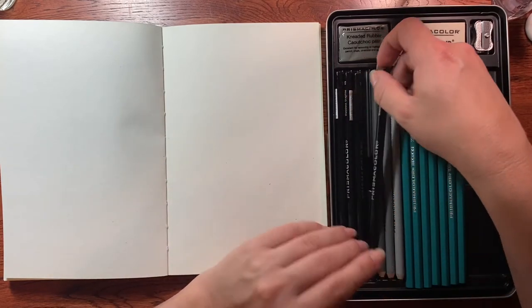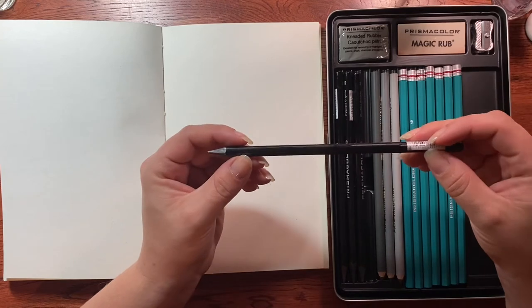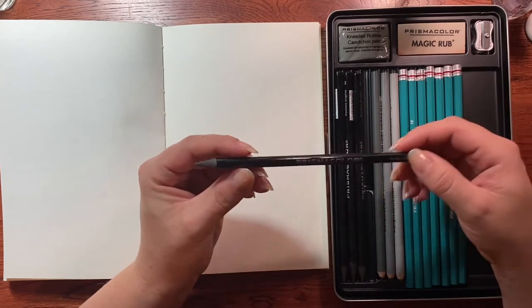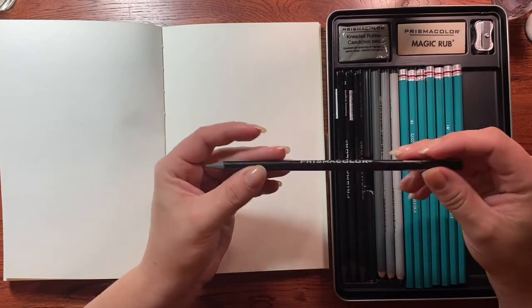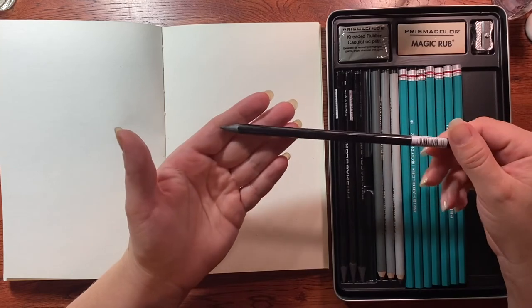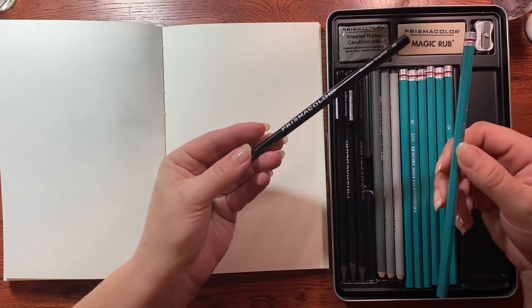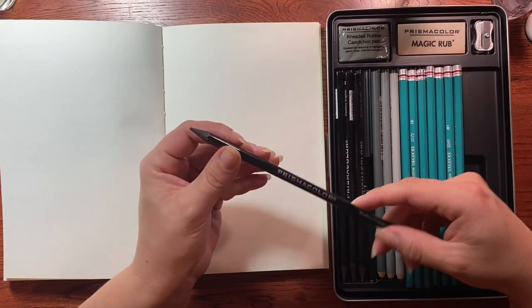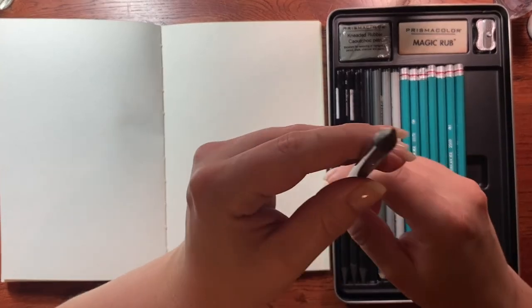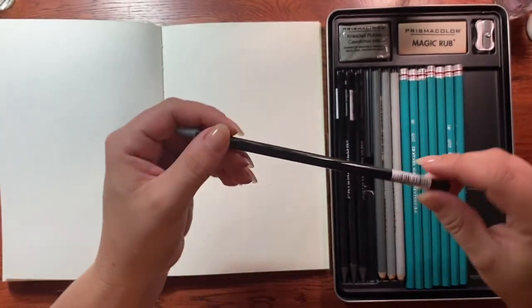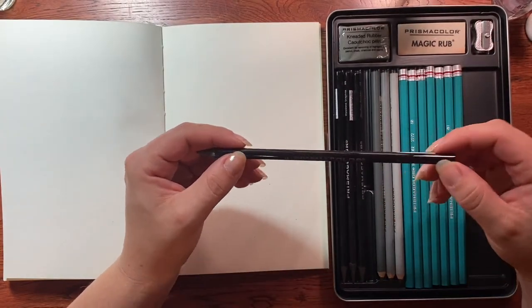And these are the woodless graphite pencils. So these are all entirely made of graphite. These are decently heavy, a lot heavier than these because this is pure graphite and it doesn't have any wood around it. It's just pure. I don't know if you can see that, but this whole thing is just pure graphite.